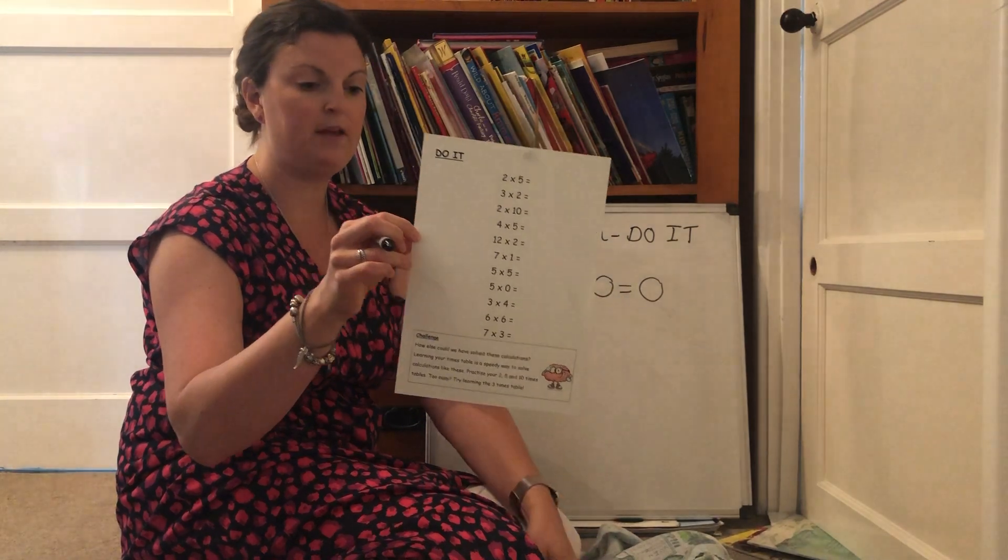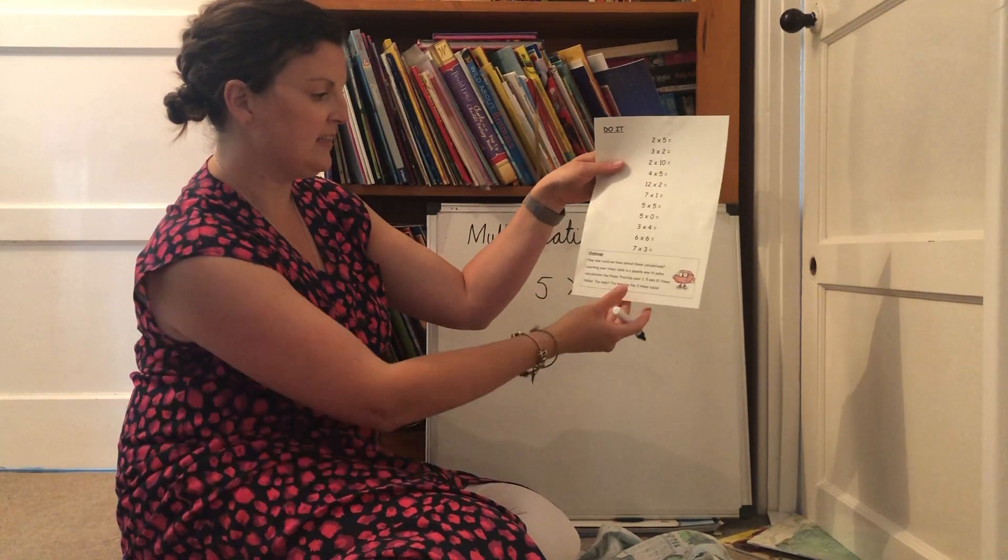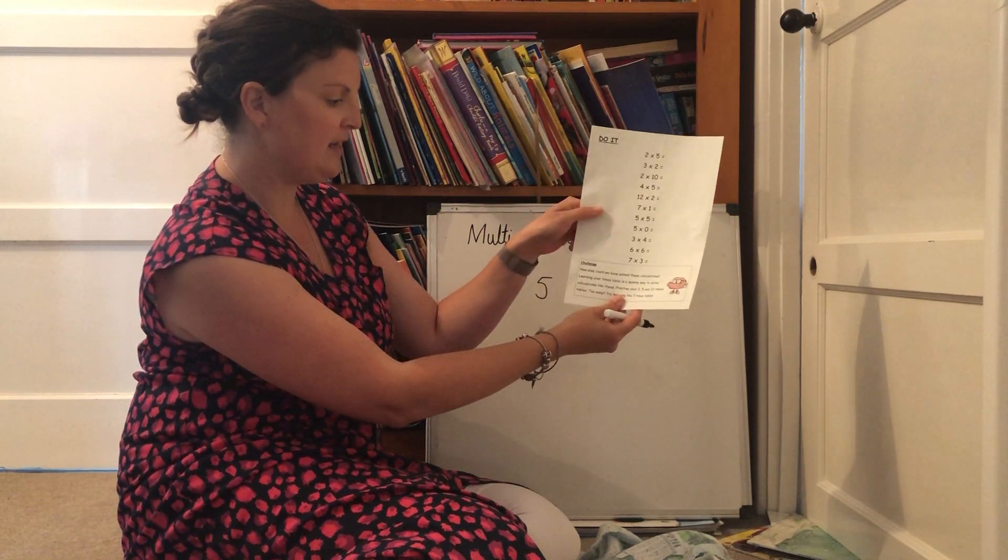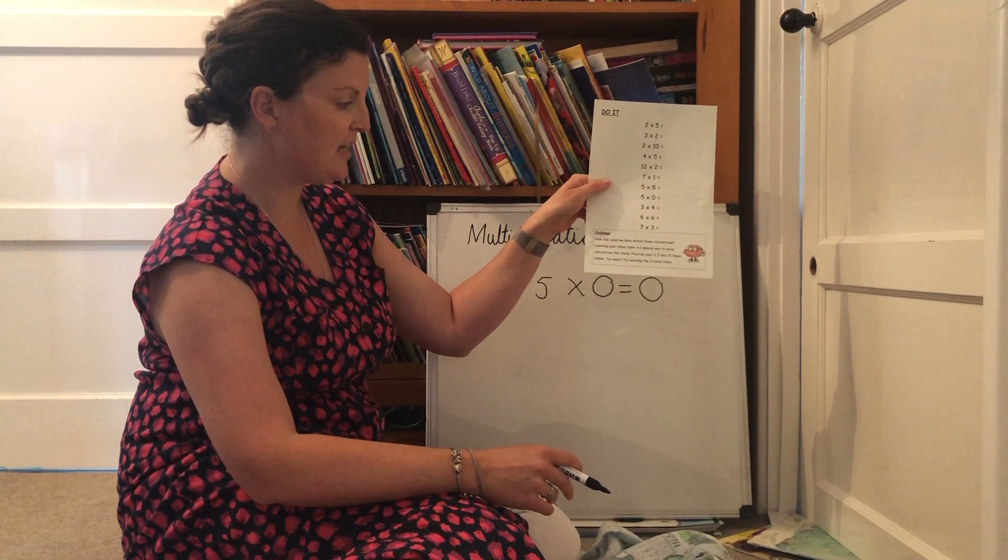Our little meta down there is our brain making us think. There's a challenge at the bottom. And meta says, how else could we have solved these calculations? Learning your times table is a speedy way to solve calculations like these. Practice your two, five and ten times tables.